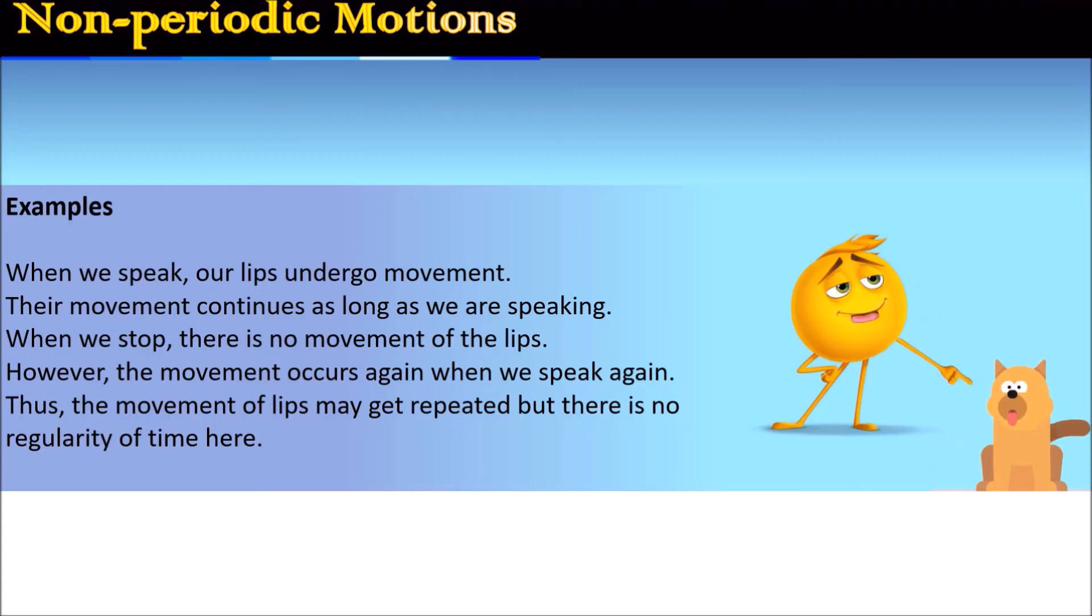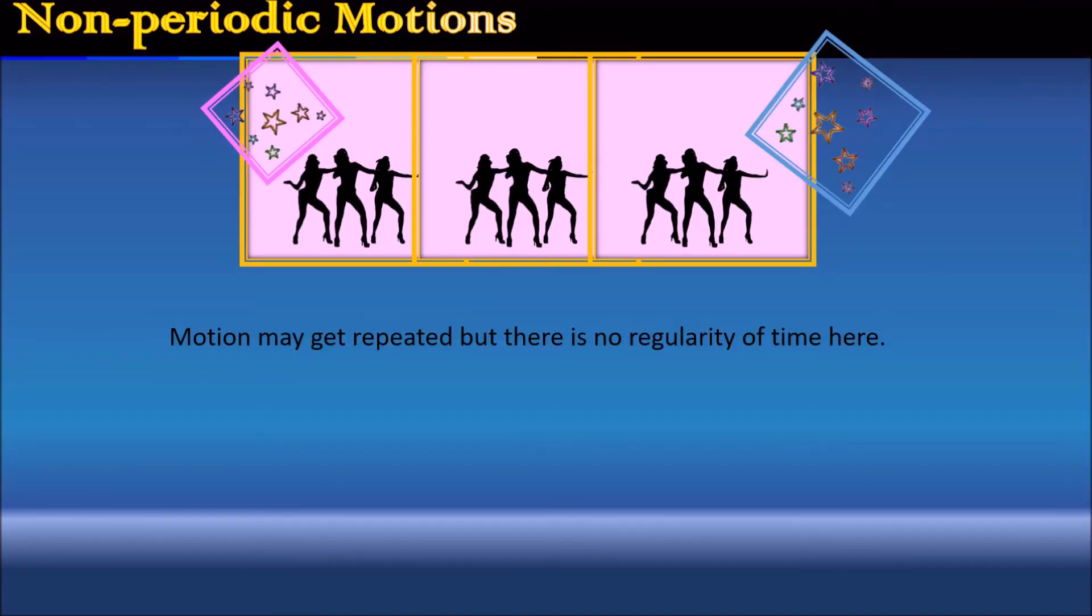Examples. When a person speaks like I am talking now, so my lips are moving. This movement is as long as I am speaking. When I stop, there is no movement of the lips. The movement occurs again when I am speaking. Thus, the movement of the lips may get repeated, but there is no regularity of time here.